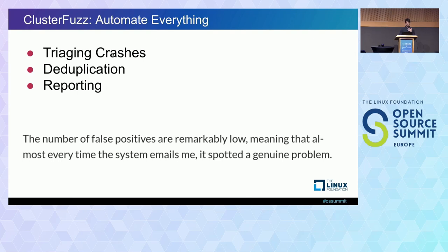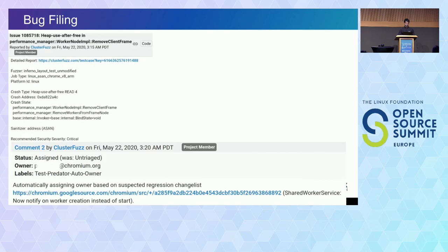Once assigned, ClusterFuzz will periodically test if the bug's been fixed in a new build and close the bug if so. This summarizes the automation ClusterFuzz does: triaging crashes, deduplication, and reporting. There's feedback from the curl developer mentioning that false positives are very low with fuzzing — whenever you get a crash, it's typically because of a real issue. ClusterFuzz also files bugs with a summary of the issue and a few stack frames, and can assign an owner based on which commit introduced the bug through bisection.